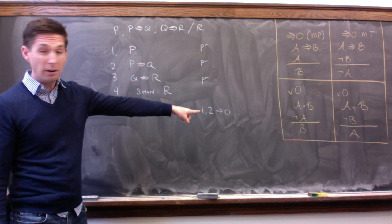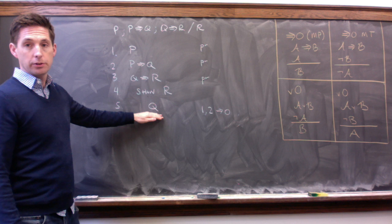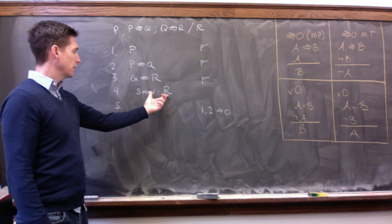Hopefully that makes sense. That says, how do I know Q is true? Well, we've got this rule, arrow out, and given lines 1 and 2, we're allowed to get Q from that rule.